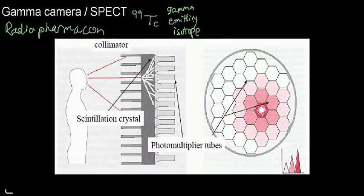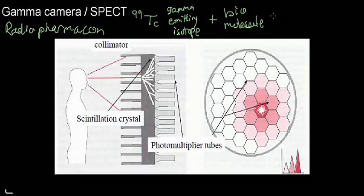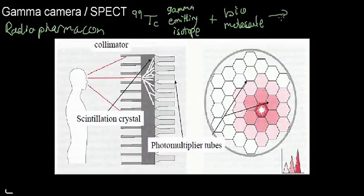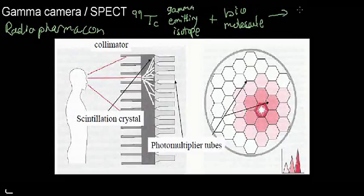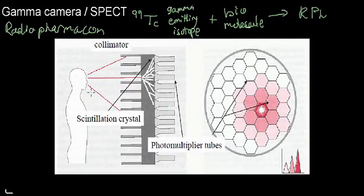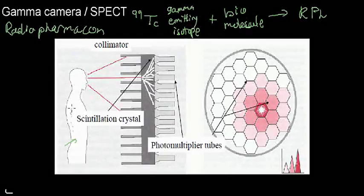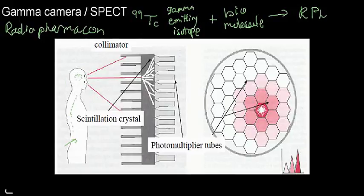Let's say I couple technetium-99 with some biological molecule that I want to use to look into the functionality of an organ — or a subdivision in the brain, as shown in this example. I got a radiopharmacon, which was injected into this person's veins. It's slowly making its way to where it naturally belongs. If this biological molecule is absorbed in the brain, it's going to get there, settle, and emit gamma radiation in all directions.